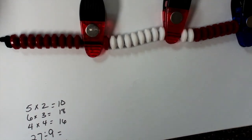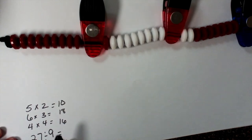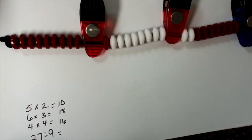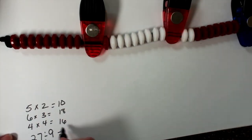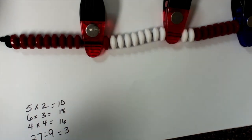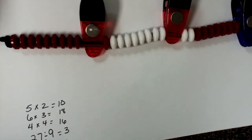And that's what we want to have happen. So how many groups did I have here? One, two, three — that's three groups. So 27 divided into groups of nine is three. That's another way that you can use the bead string.